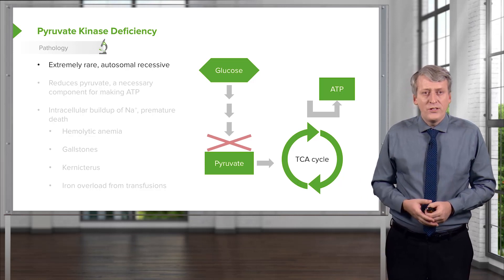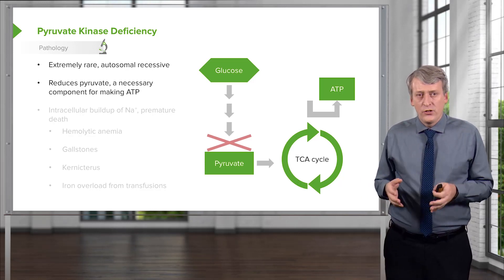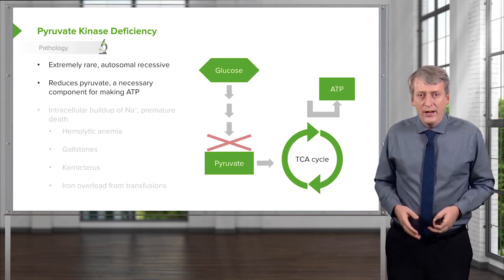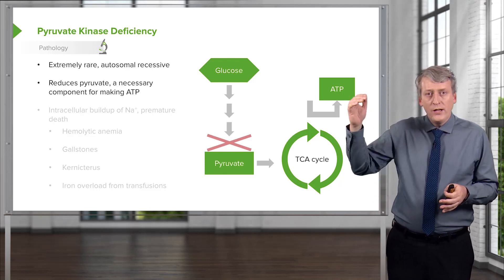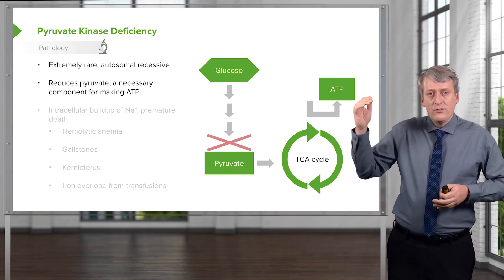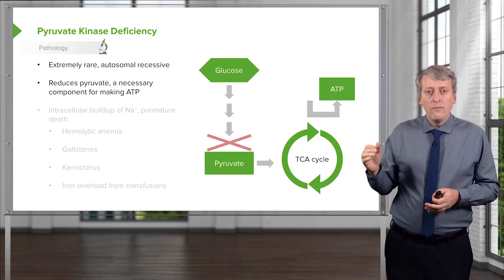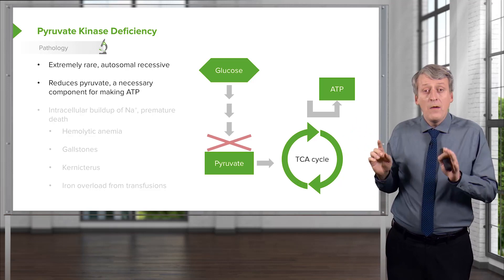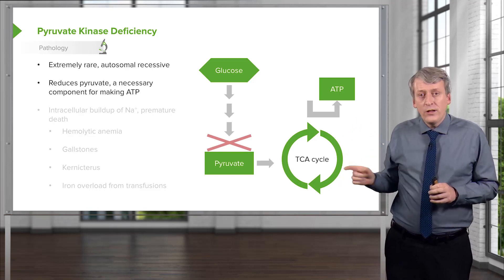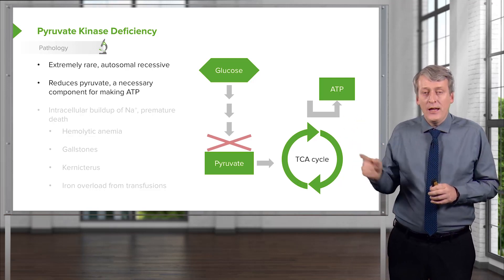It's autosomal recessive, and basically there's a reduction in the production of pyruvate. Because they can't get down to pyruvate, they're having a hard time putting pyruvate into the citric acid cycle. And remember, the citric acid cycle is responsible for making ATP.